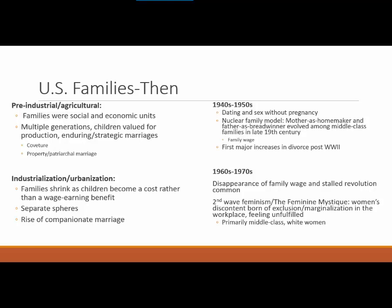When we move into the industrialization and urbanization era at the end of the 1800s and early 1900s, which we've discussed in previous chapters in terms of how it changed society economically, it also changed the family. Families shrink during this time because children become more of a cost rather than a wage-earning benefit. This becomes especially true once the United States passes labor laws limiting the ability of children to work.